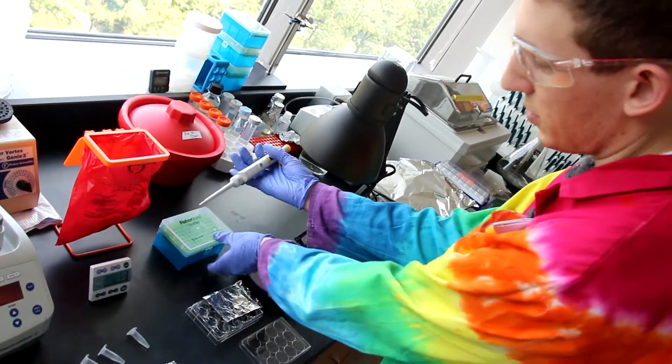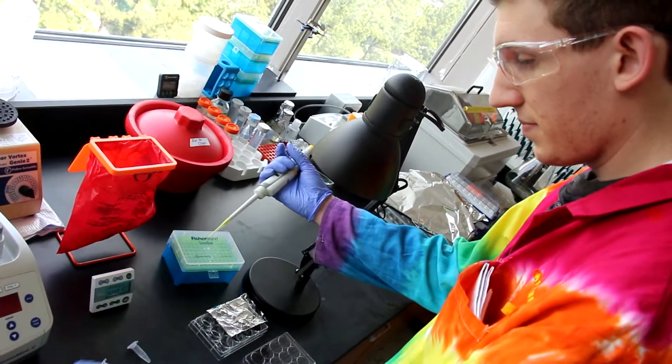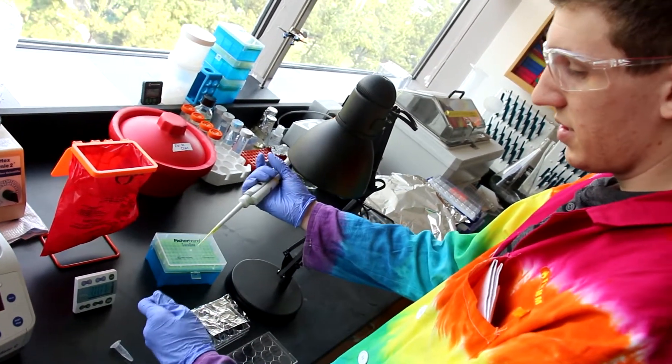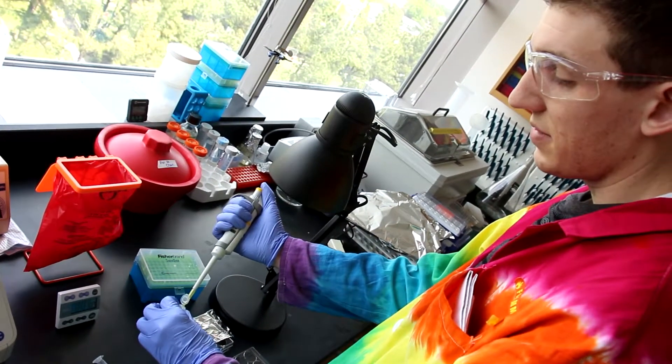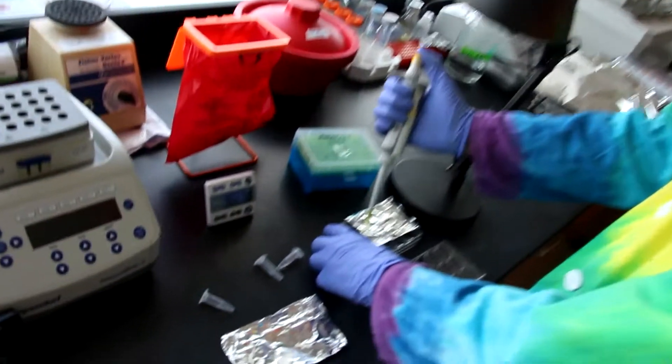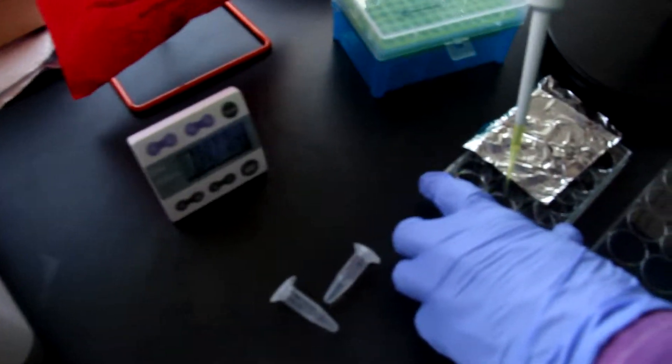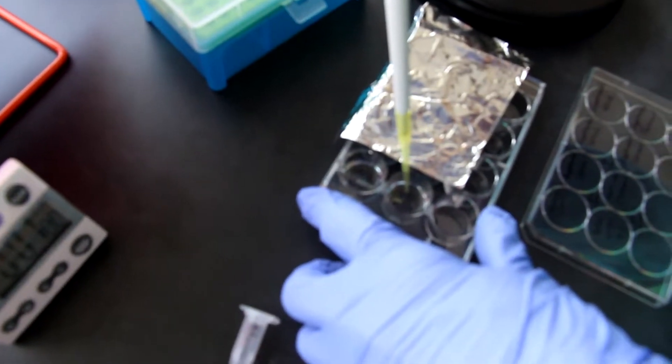You'll take a P20 pipette and add 20 microliters of your ATP positive directly to the center of the ATP positive well. Once you add it, count to five and then photoconvert for one minute.